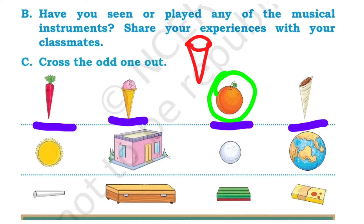On the second row, we have sun, house, moon and globe. Sun is in a circle, house is in a rectangular shape, moon is a circle and globe is a sphere shape. Sun, moon and the globe are all in sphere shape, but the house is in rectangular shape. So that is the odd one out.